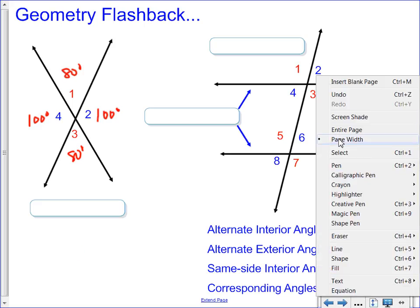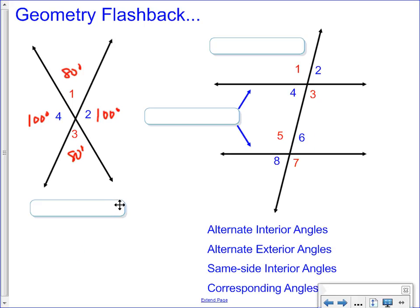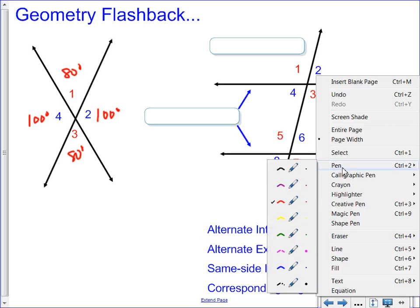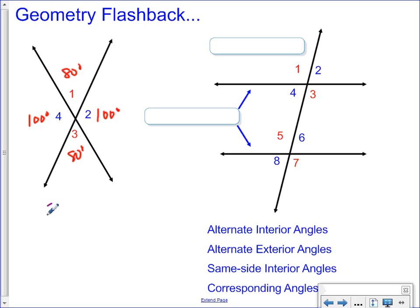What are the name of those angles that are opposite from each other? Yes! They're called vertical angles. Angle one and angle three and angle two and angle four are called vertical angles.